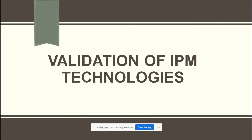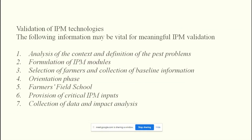Validation of IPM technology means verifying that something is authentic and accurate. In a specific area with a particular kind of key pest, you have taken certain measures and now you have to validate that these measures are authentic and accurate. That is what validation of IPM techniques means.